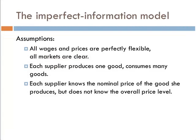Assumptions: All wages and prices are perfectly flexible. All markets clear. Each supplier produces one good and consumes many goods. Each supplier knows the nominal price of the good she produces, but does not know the overall price level. And this is where the key difference lies.